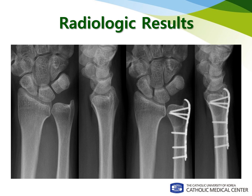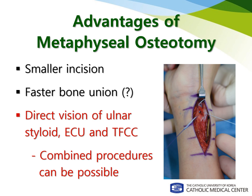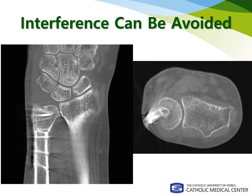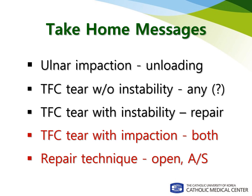This is what it looks like after ulna-shortening and TFCC foveal repair. After metaphyseal ulna-shortening osteotomy, TFCC foveal repair can be done in an open or arthroscopic manner. Nowadays I prefer to do arthroscopic TFCC foveal repair for most patients. Interference between screws and suture anchors can be avoided with a sophisticated surgical technique. In conclusion, if a patient has ulnar impaction syndrome and TFCC foveal tear with instability, the patient may need ulna-shortening osteotomy and TFCC foveal repair simultaneously. Thanks for your attention.